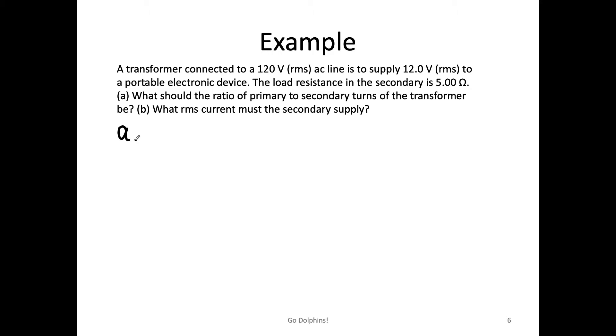So we have a transformer connected to a 120 volt RMS AC line to supply 12.0 V RMS to a portable electronic device. The resistance of the device is 5.00 Ω. What should be the ratio of primary to secondary turns of the transformer?